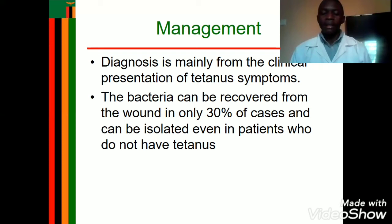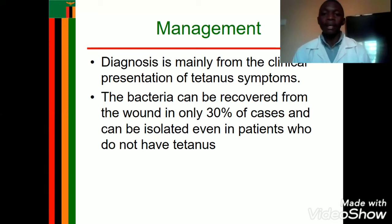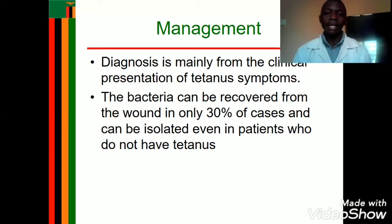On promoting a patent airway: if there are symptoms of respiratory failure, suction the airway to maintain patency. Reposition the baby for free flow of secretions. Use a tongue depressor to prevent the tongue from falling back and blocking the airway. These and other points can be added when promoting a patent airway.